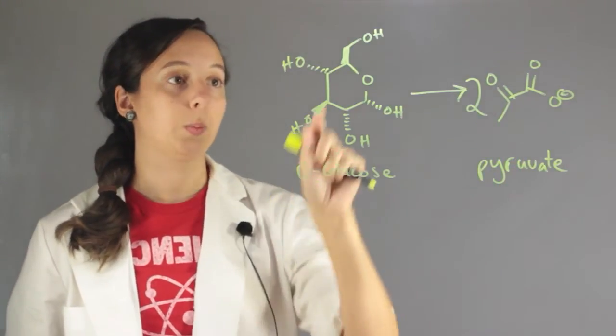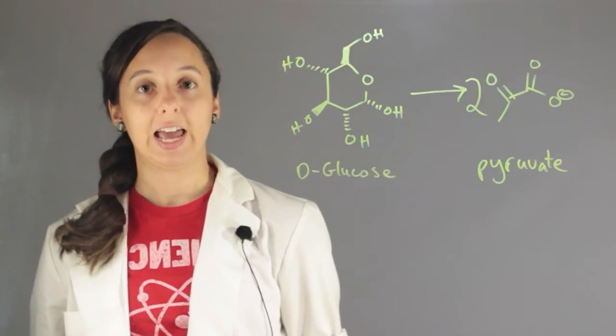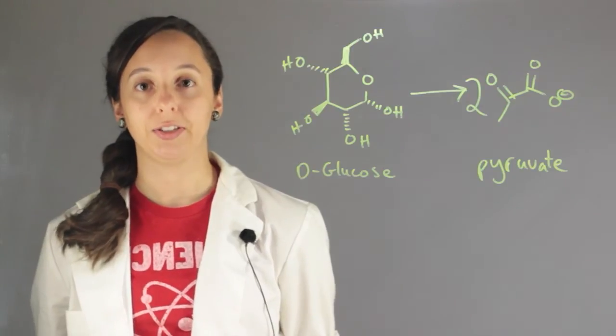Because we're basically splitting this in half and creating this functional group. I'm Robin Higgins and this has been what is the net equation for glycolysis in the citric acid cycle.